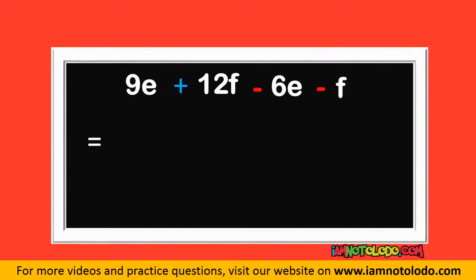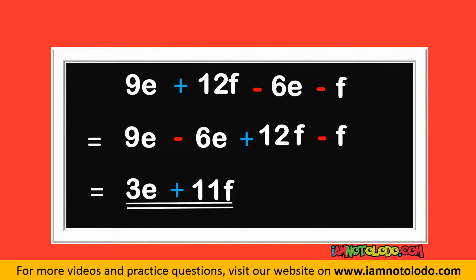Let's collect like terms. 9E minus 6E plus 12F minus F. So this equals, they both have the same alphabet, right? Good. So 9 minus 6 is 3. Write down your alphabet. Plus 12F minus F is what? That is plus 11F. This is our final answer.